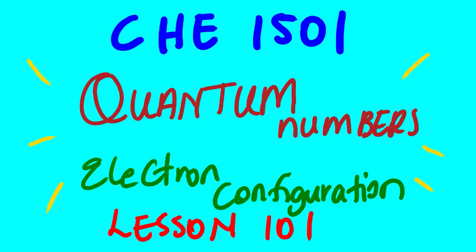Today's lesson is Chemistry 1501. We are going to look at quantum numbers as our topic for today. The subtopic is electron configuration, lesson 101. Before we go straight to our main focus which is electron configuration, let us go through the basics of elements.